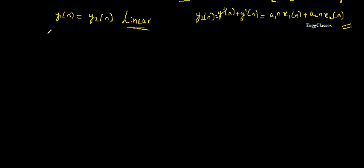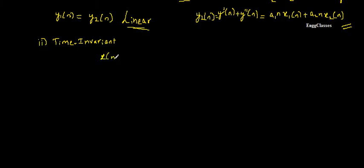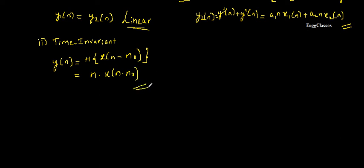Next we consider the second property: time invariance. Time invariant means the output should not vary with time. The definition states that a shift in the input must lead to an identical time shift in the output. For the first half, we consider a shifted input x(n - n₀), give it to system h, and get the output y(n) = n·x(n - n₀).